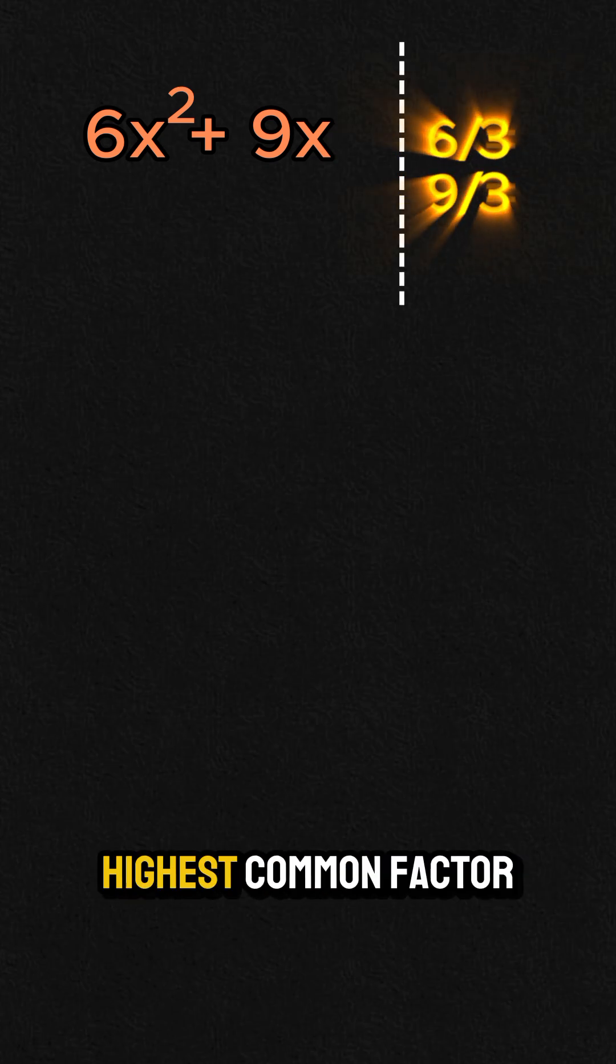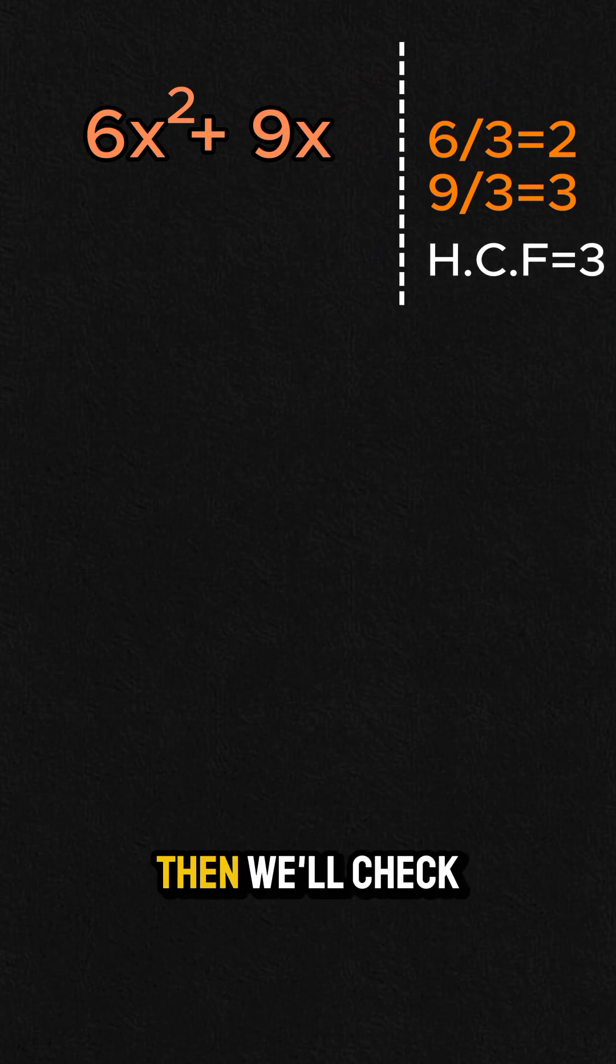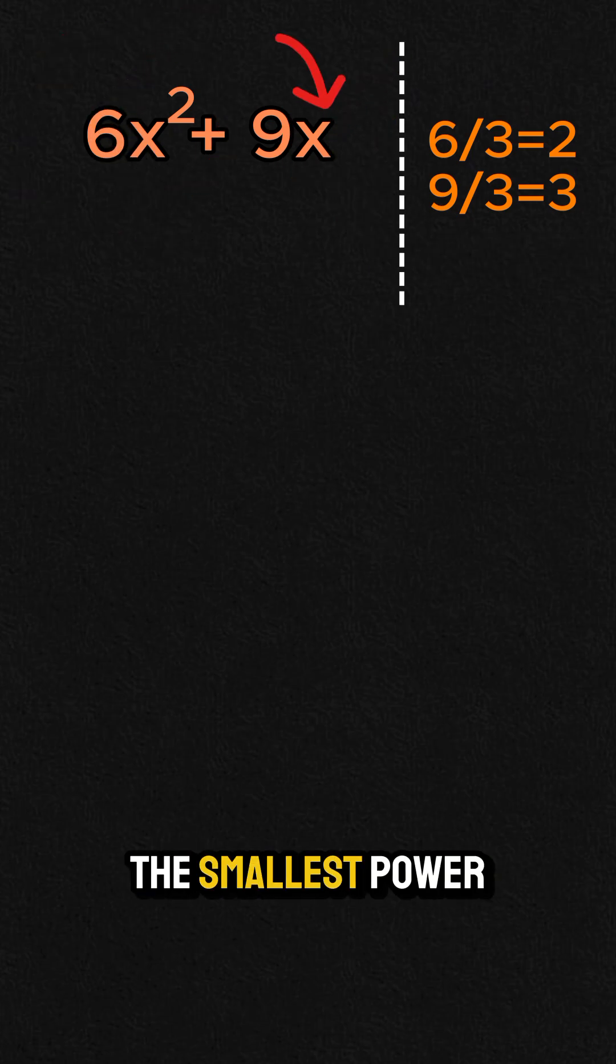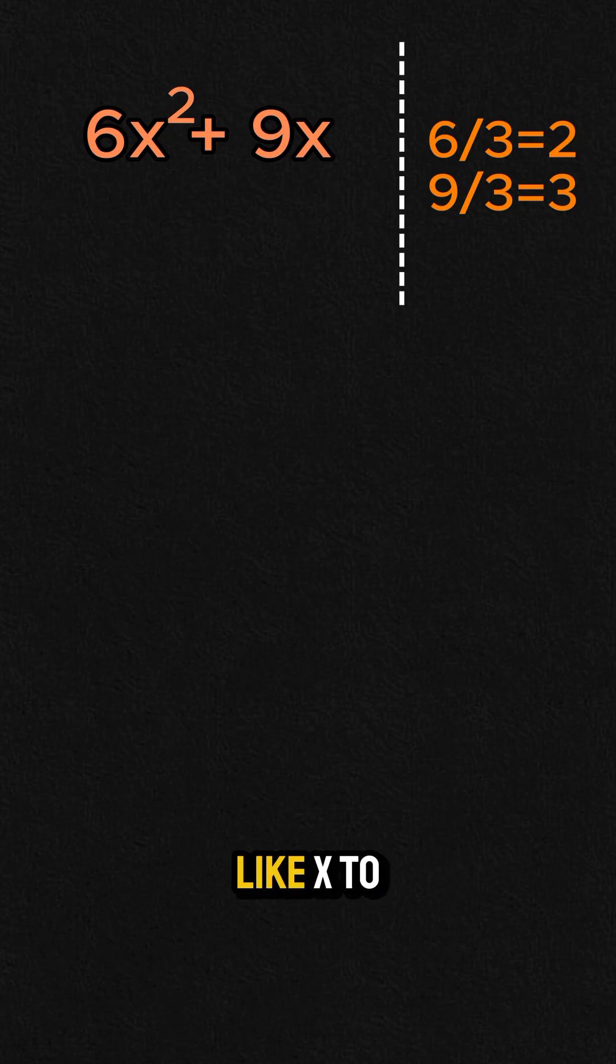So in 6 and 9, the highest common factor is 3. Then we'll check the variables. So both terms have x and the smallest power is just x, like x to the power of 1.